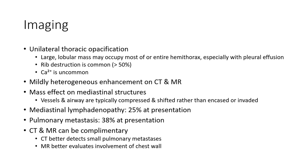There is heterogeneous enhancement on CT and the mass may cause mediastinal displacement and rib destruction. The mass tends to compress and displace rather than encase or invade. Bone metastasis occurs in around 25% at presentation. Pulmonary metastasis occurs in around 38% at presentation. CT and MRI can be complementary — CT better detects small pulmonary metastases, while MRI better evaluates involvement of the chest wall.